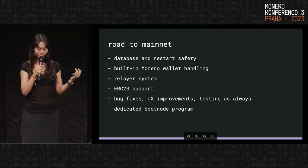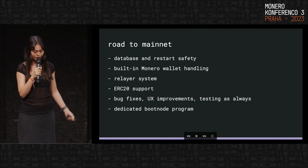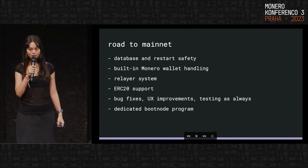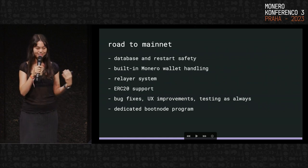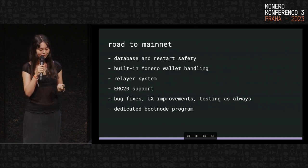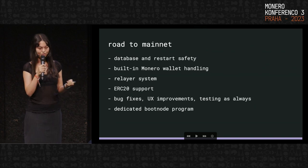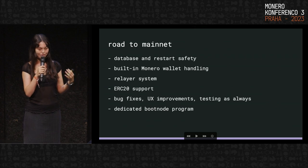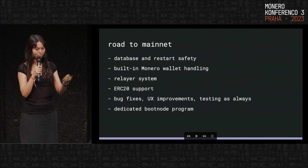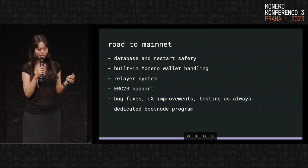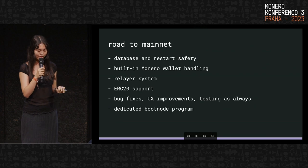It'll automatically send the funds where you want them to go at the end. There's also a relayer system. Due to the way Ethereum works, you essentially need to pay gas for every transaction. But say you're Bob and you don't have any ETH but you want to get ETH — how are you going to pay for gas? The relay system fixes that problem. You get someone else to pay gas for you and in exchange they get a little bit of the swap funds.